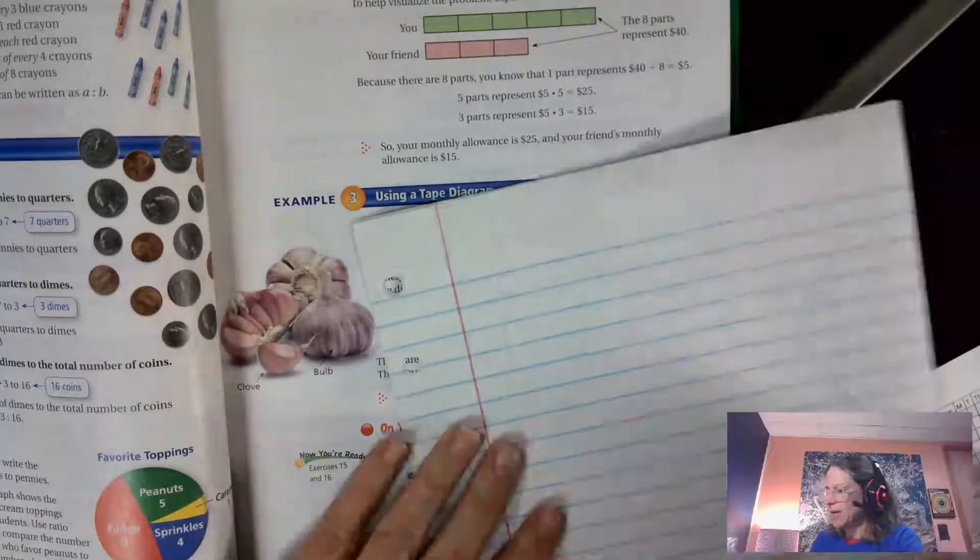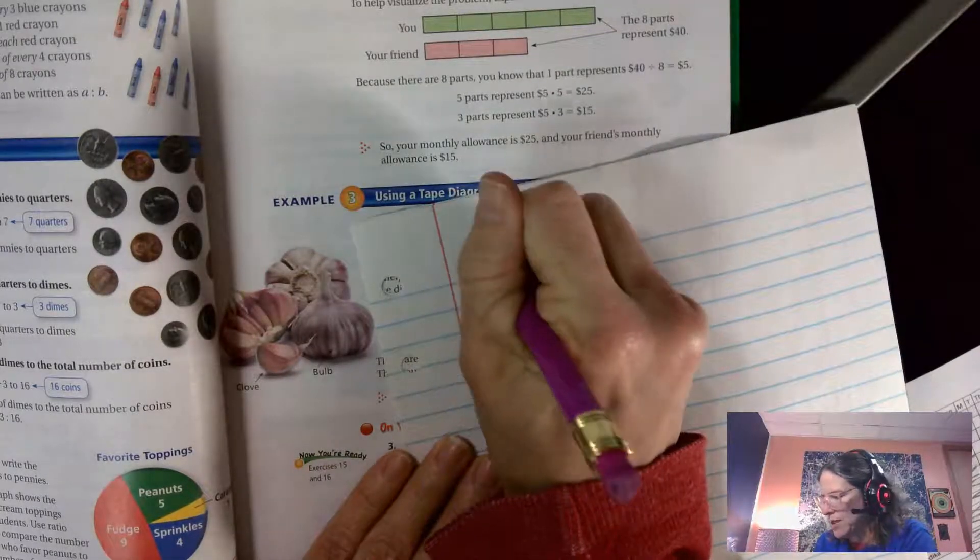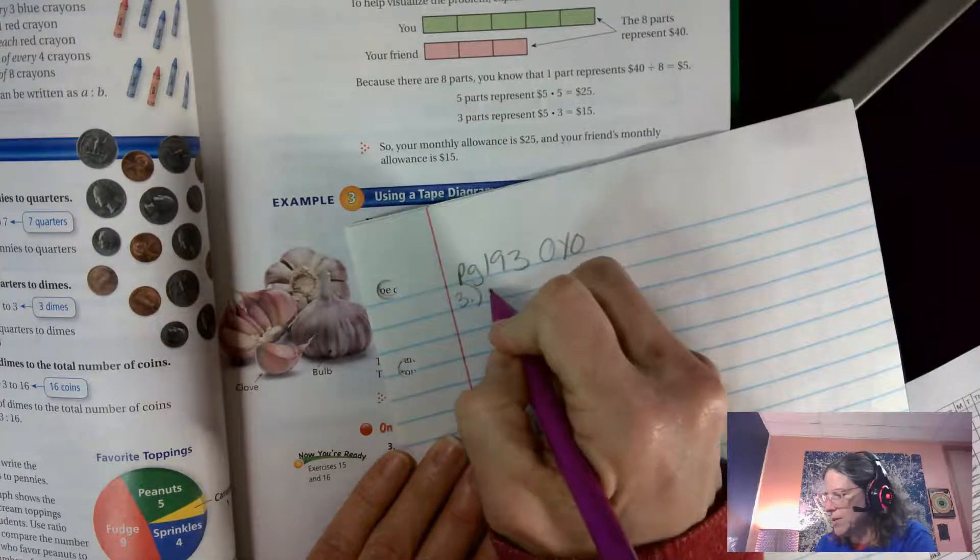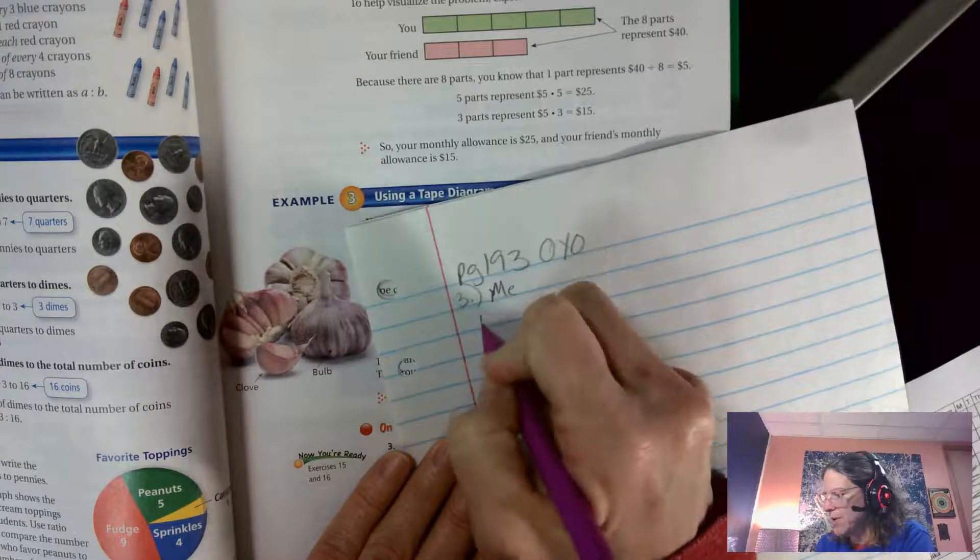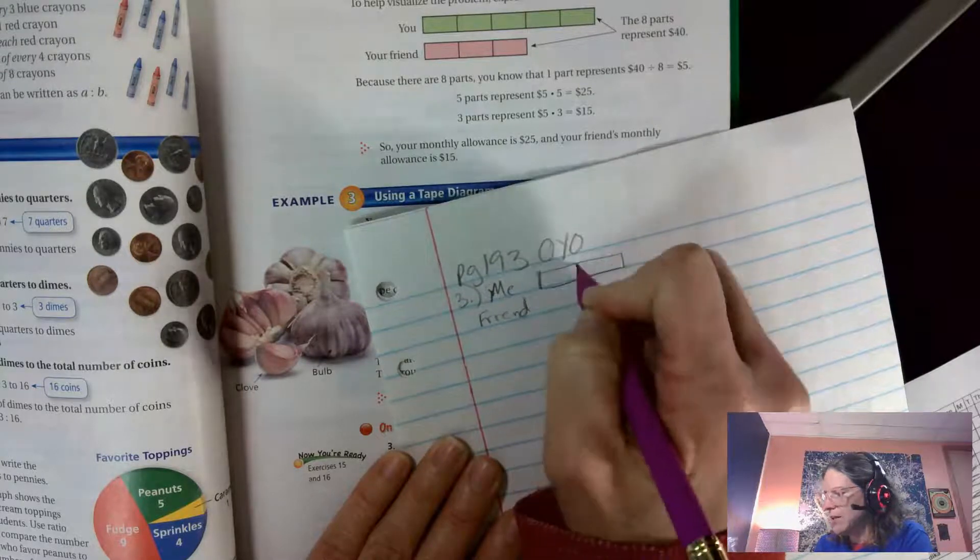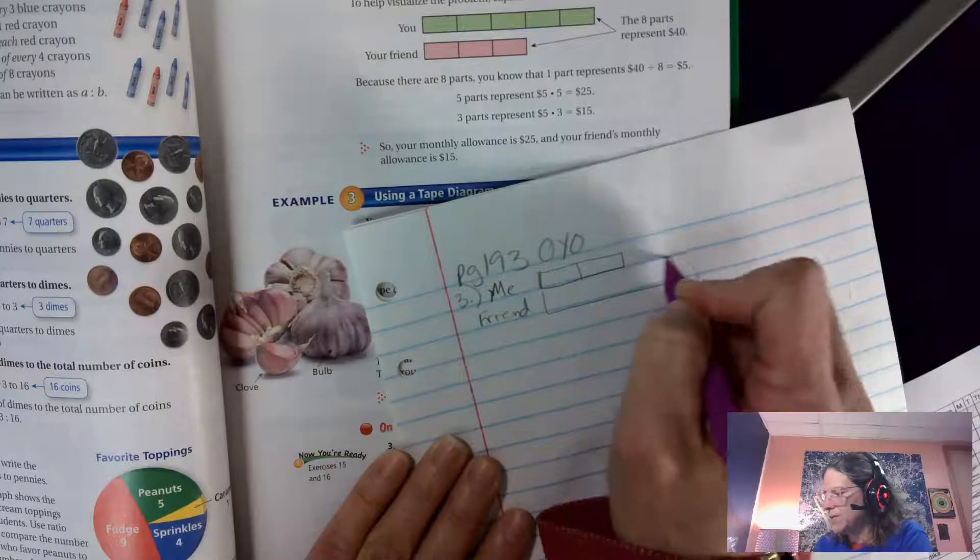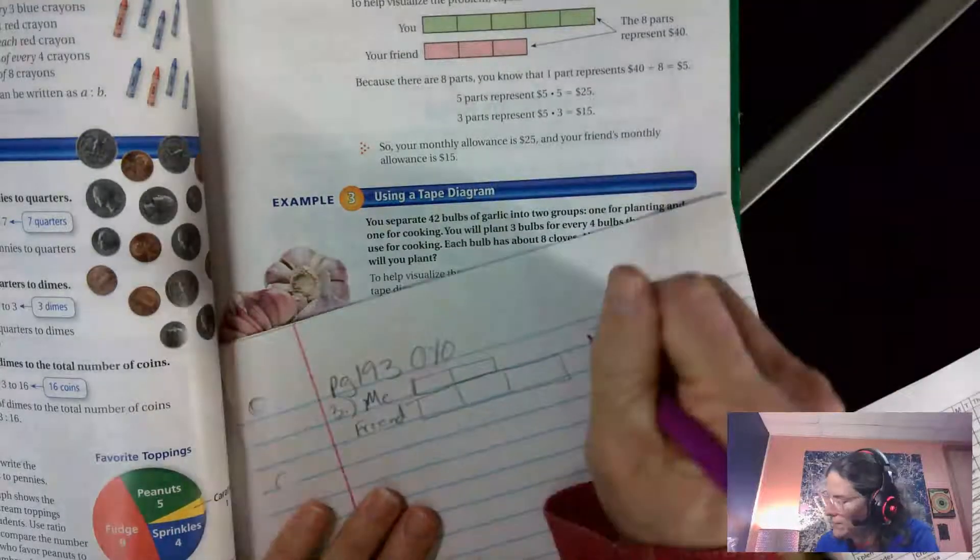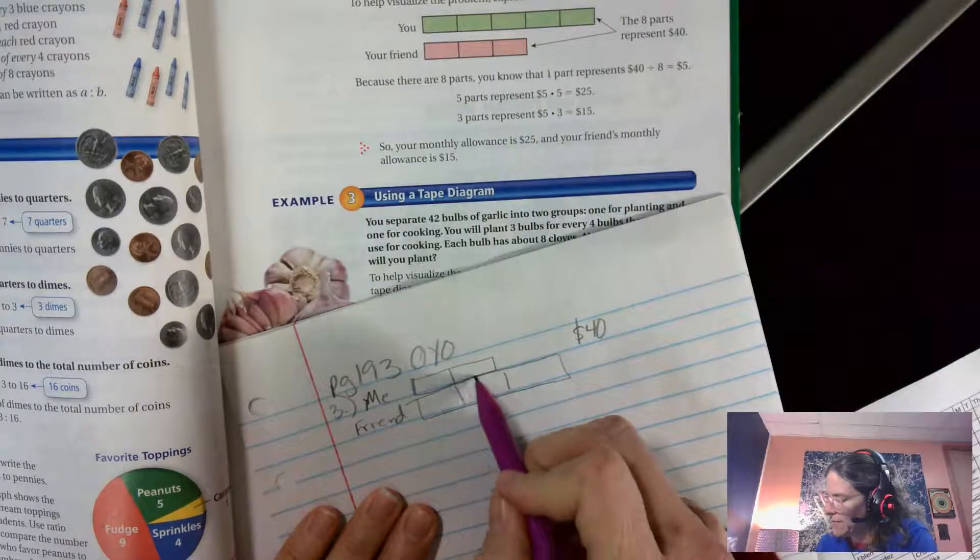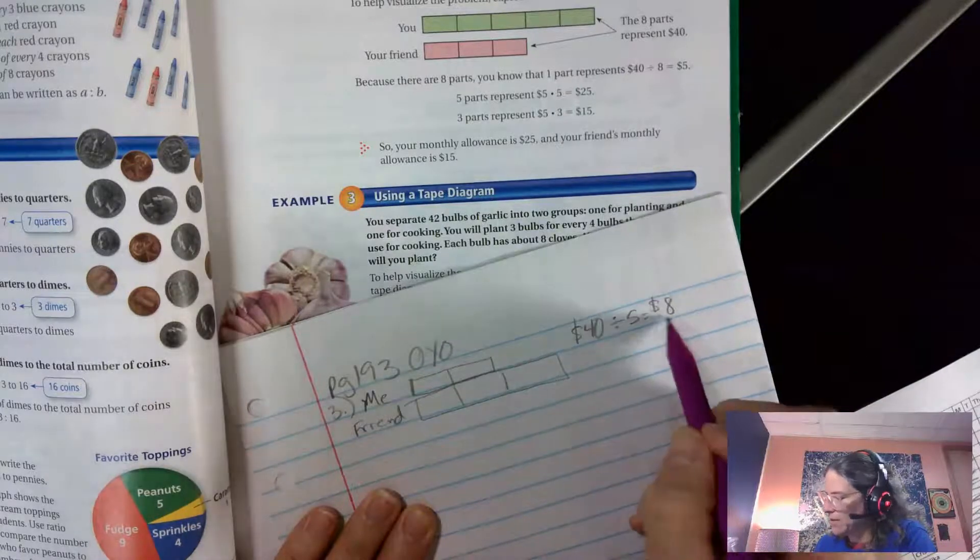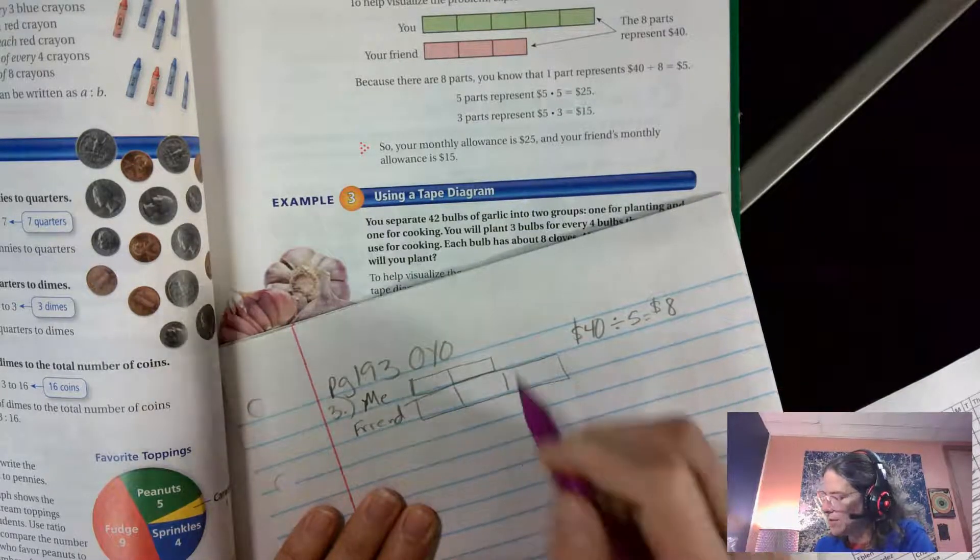I'm gonna draw my tape diagram. So this is page 193, on your own number three. Okay, so here's me and this is my friend. I have two parts and my friend has three parts of our allowance. So I take the forty dollars, I divide it by these five sections, and I have eight dollars each. Each section is worth eight dollars.